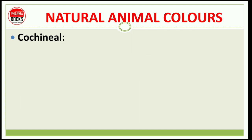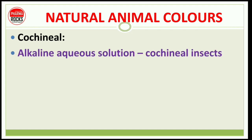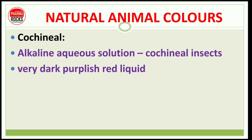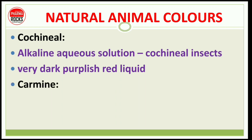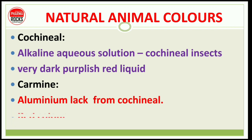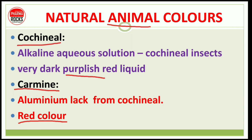Natural animal colors: cochineal — alkaline aqueous solution, cochineal insects में से पाया जाता है, very dark purplish red liquid. Carmine — aluminium lake from cochineal, and it has a red color. Exam में पूछें तो: carmine का color red है, और cochineal having purplish red liquid.